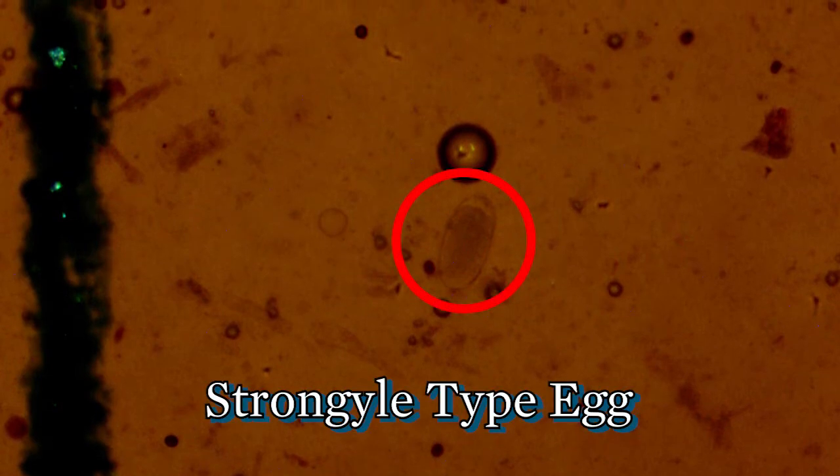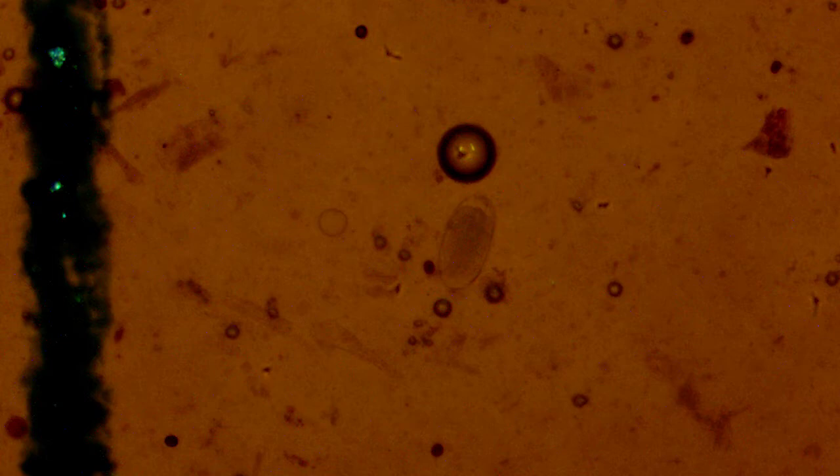And you're going to start scrolling up or down in the column until you come across a strongyle-type egg as we see here in the middle. Now again, this is strongyle-type or gin and this is primarily what we're going to be looking for.